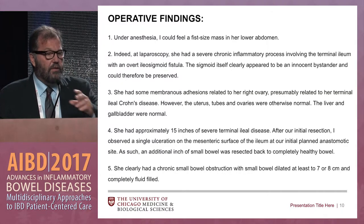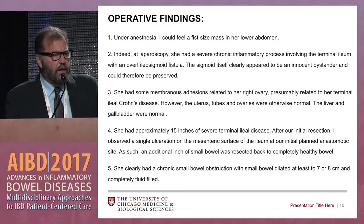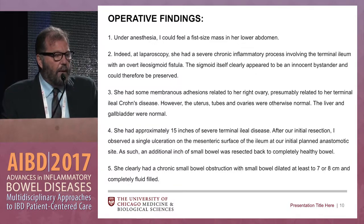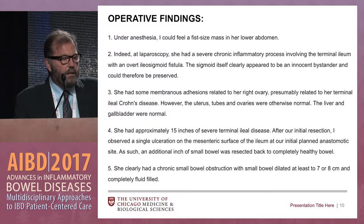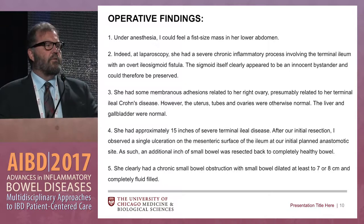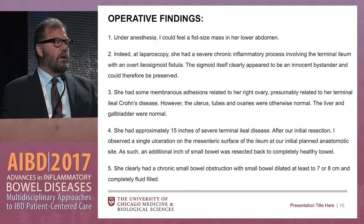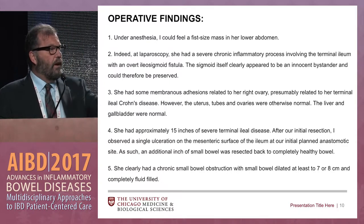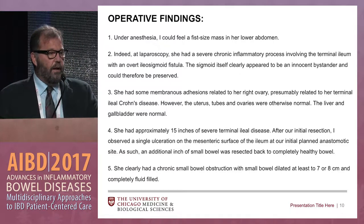My operative findings: under anesthesia, I could feel a fist-sized mass in the lower abdomen. And indeed, at laparoscopy, there was a severe inflammatory reaction involving the terminal ileum with an overt iliosigmoid fistula. The whole point is that this is a great time to do a thorough inventory of what's in the peritoneal cavity. She's a young woman who might have right lower quadrant pain — what did her ovaries look like? I try to catalog each pertinent organ in the peritoneal cavity and describe the findings.